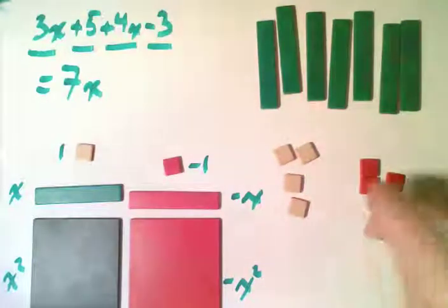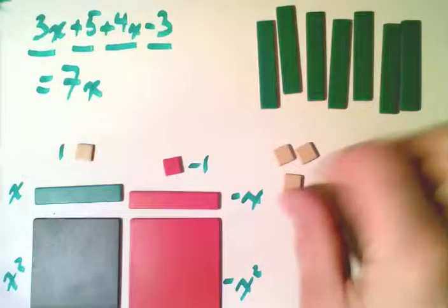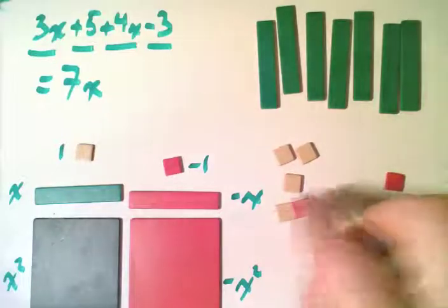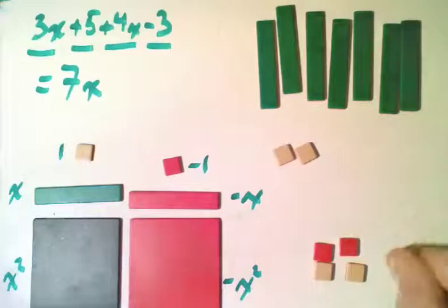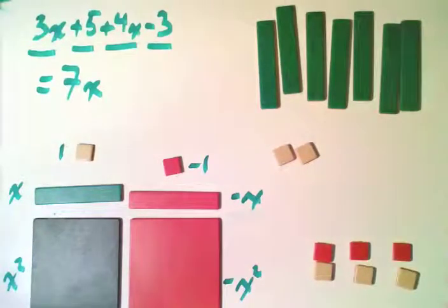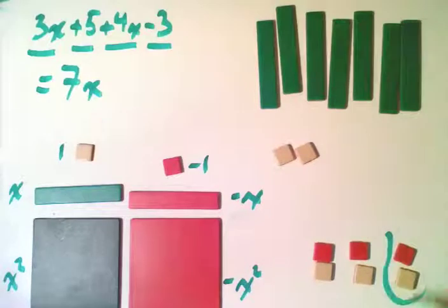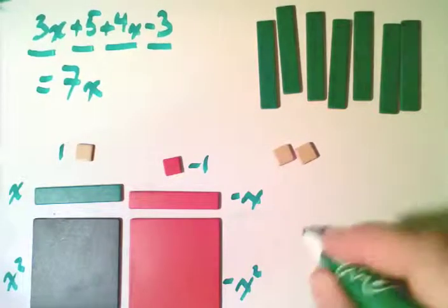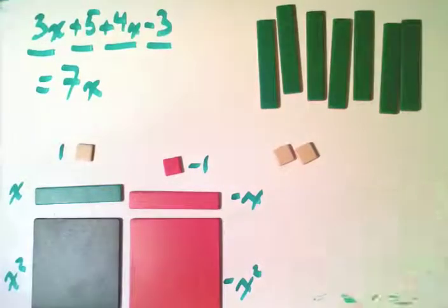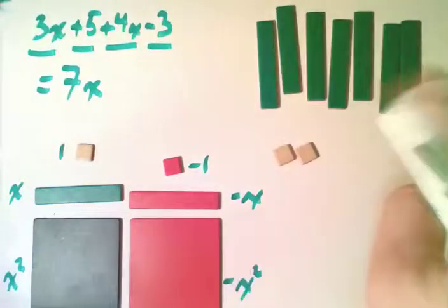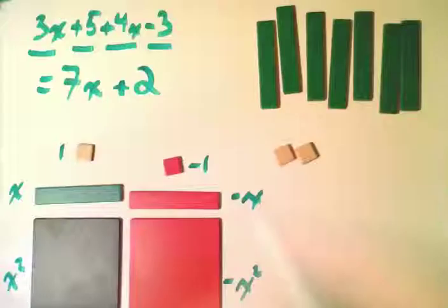And then we pair these off, and we use the zero principle. So the zero principle basically says that if you have two tiles of the same size, but they're opposite colors, they are opposite tiles, and thus each pair of them equals zero. So that equals zero, and all of these equals zero. And so they are physically gone from the picture. You can take them right off the screen. There they are. They're gone. And we're left with the 7x, and we have plus 2 to finish that polynomial off.